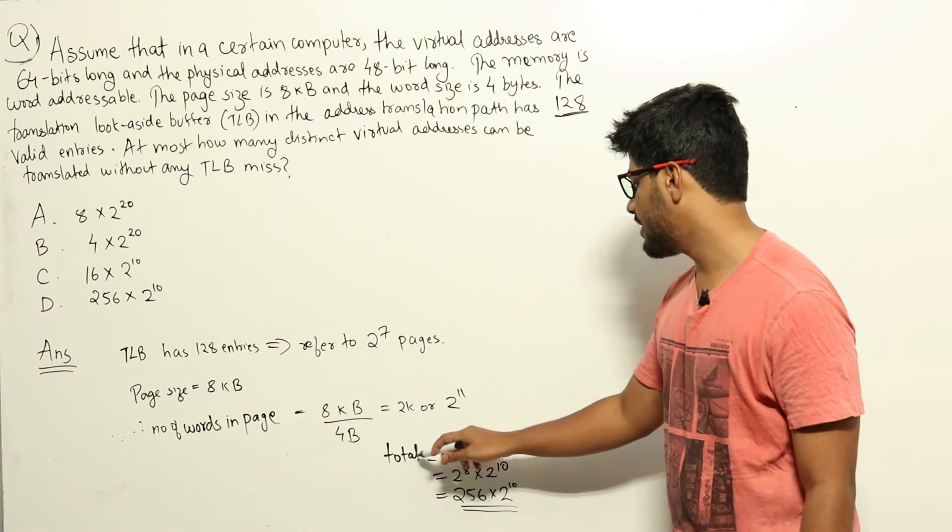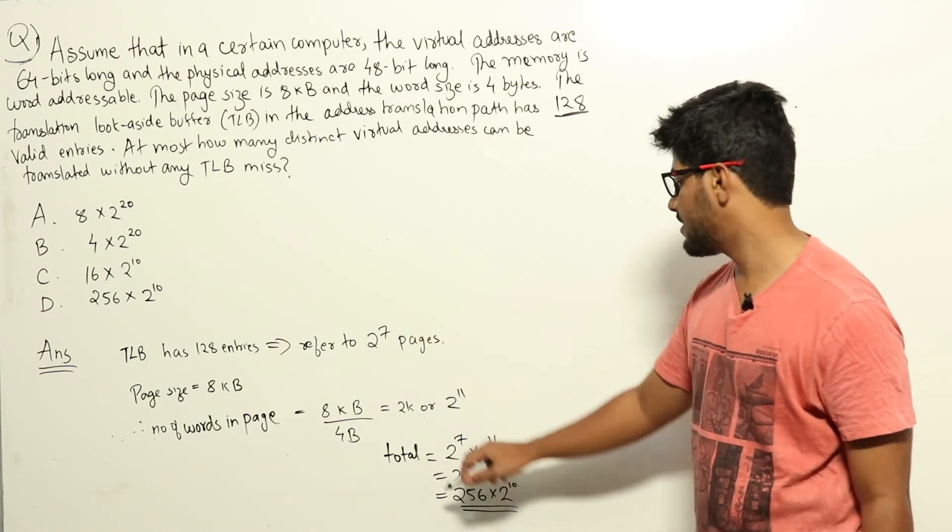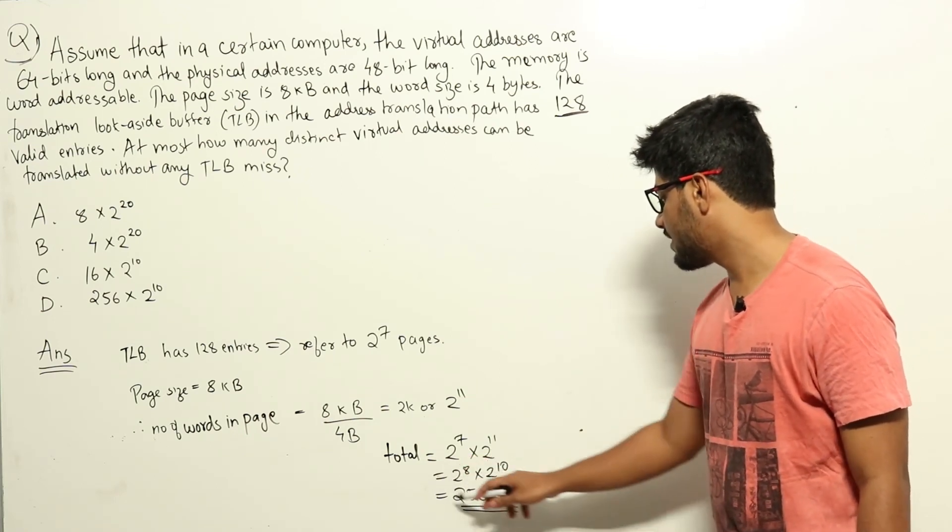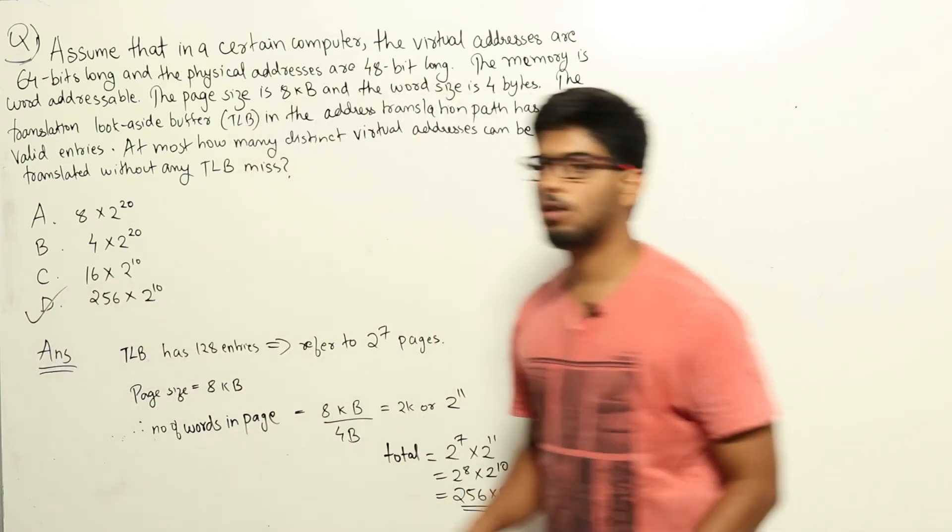Therefore the total number of words will be 2 power 7—that is what we got from here—2 power 7 pages into 2 power 11. That will be equal to 2 power 8 into 2 power 10, that is 256 into 2 power 10. Looking at options, that is option D.